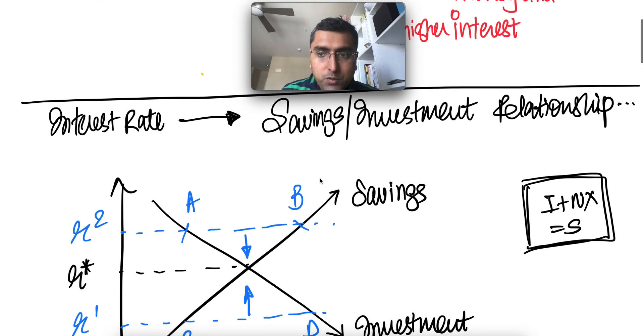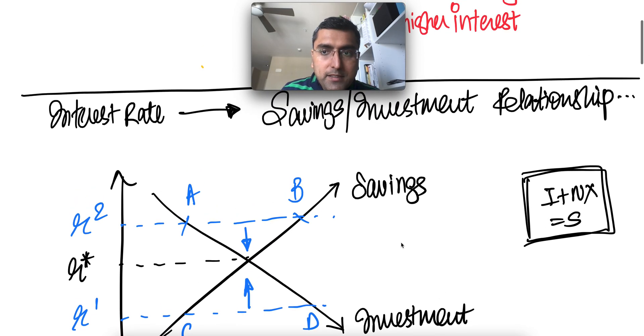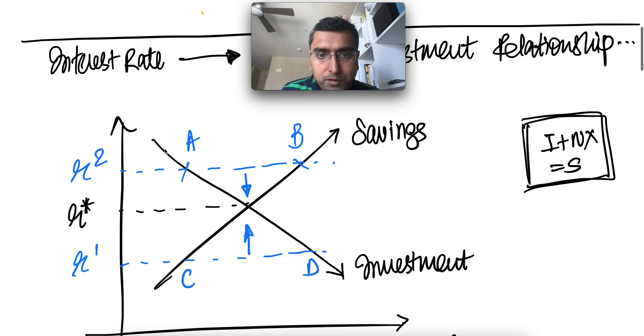So now let's look at the two curves. We've seen from part one, the savings is I plus NX, where NX is net export and investments. So the savings and investment relationship is as follows.